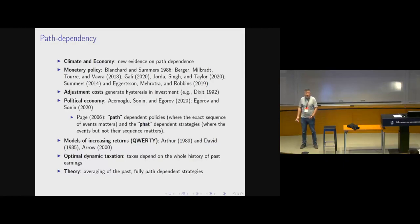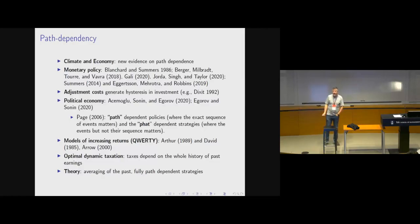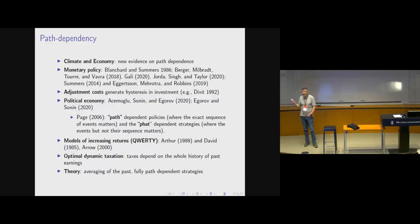For example, if you first eat potatoes and then eat foie gras, that may be very different from first eating foie gras and then potatoes — even though the cumulative amounts are the same. Models of increasing returns, the path-dependent invention of technologies like QWERTY generate increasing returns. In my own field of optimal dynamic taxation, that's why I was initially interested in path dependence — in linear taxation models you get very strong path dependency in how taxes depend on previous actions.